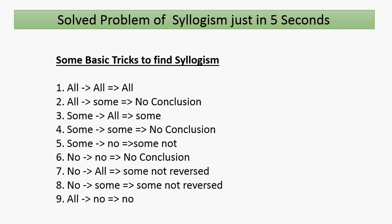The next trick: if the first statement's first word is 'no' and the second statement's first word is also 'no', there is no conclusion. If the first statement's first word is 'no' and the second statement's first word is 'all', the conclusion is 'some not' reversed. If the first statement is 'no' and the second statement's first word is 'some', the conclusion is 'some not' reversed. And the last trick: if the first statement's first word is 'all' and the second statement's first word is 'no', there is no conclusion.